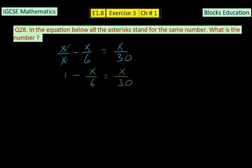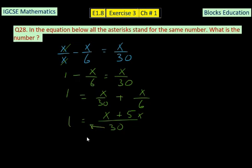Let's combine the X's together, take that term on that side. So it is 1 equals X over 30 plus X over 6. Now take the LCM of 30 and 6. LCM is 30, so we have X plus 5X over 30.